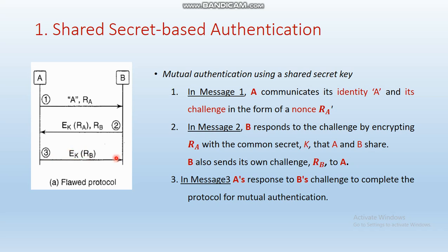In the third step, at party A's side, encryption happens for the random number RB chosen by B, again using the same shared secret key K. This encrypted random number is sent back to party B. At both ends, when the encrypted messages are received, they decrypt to get back the original message.